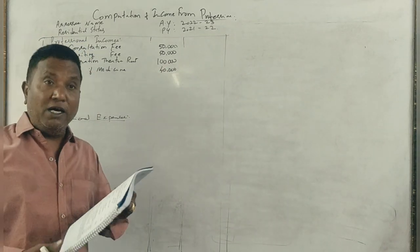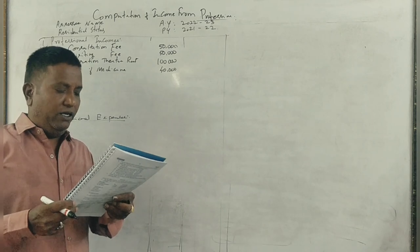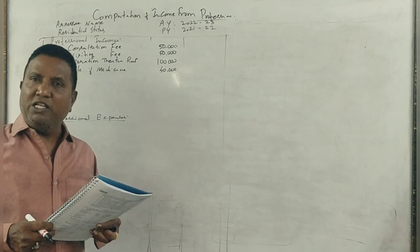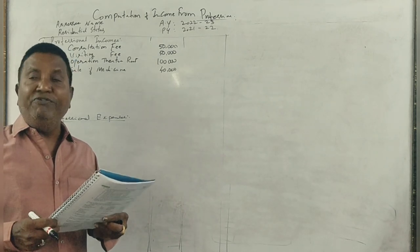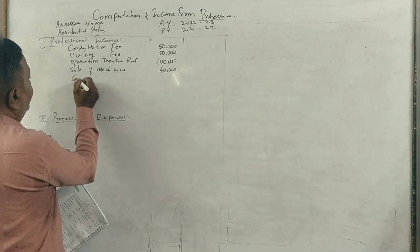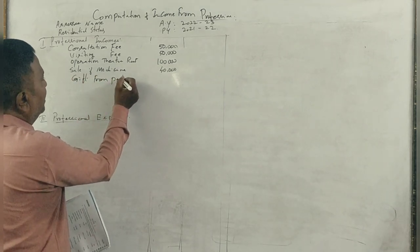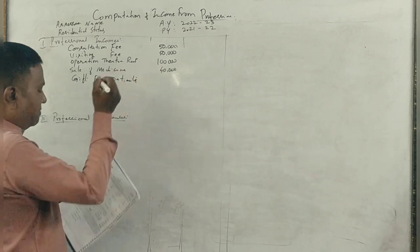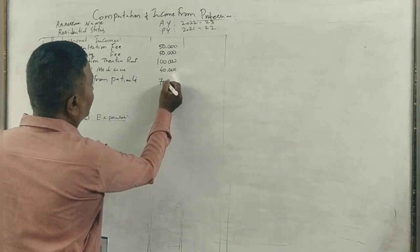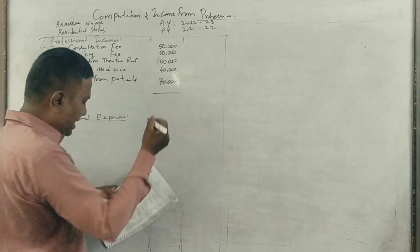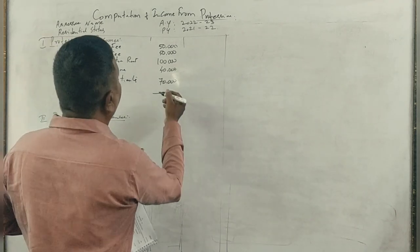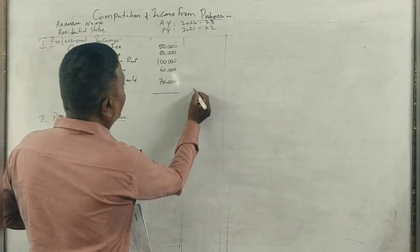You can receive interest on bonds from others. Gift from patients. This is $70,000. Adjustment is no matter how much? Yes, no matter how much. Total is 3,10,000.